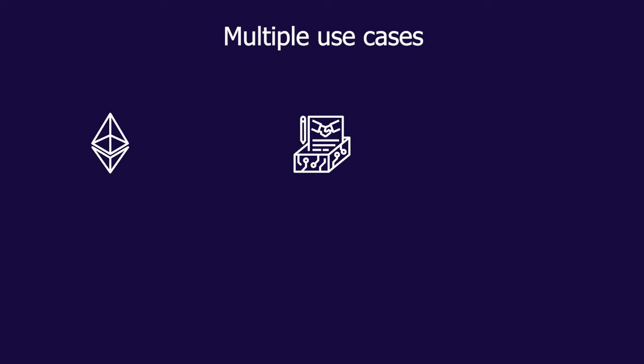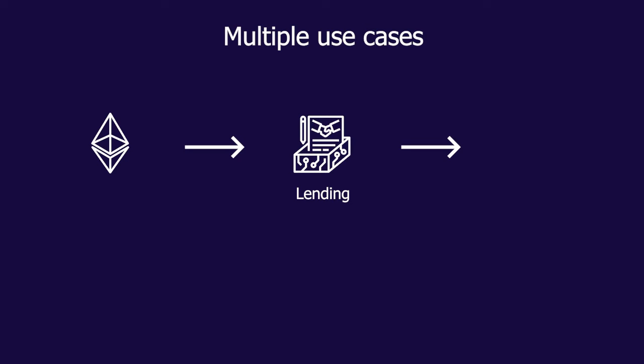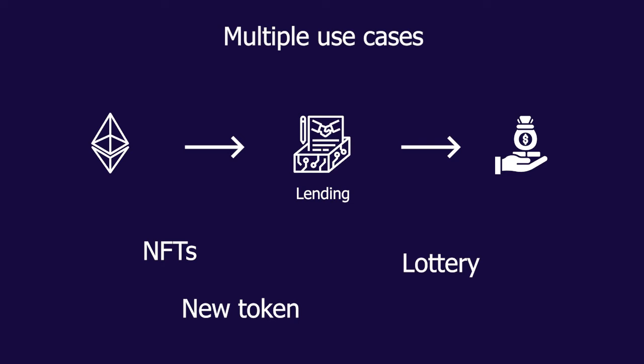This provides Ethereum with much more utility than Bitcoin, as it can now be used for more than one use case. You could write your own protocol on top of Ethereum — for example, a lending protocol — and the code will be available publicly. People can read through that code, ensure there are no loopholes, and if they find there aren't, they can send transactions to that smart contract and execute, say, a loaning platform. There are a bunch of other use cases as well, for example NFTs, launching your own blockchains, launching a lottery-based platform, and so on.